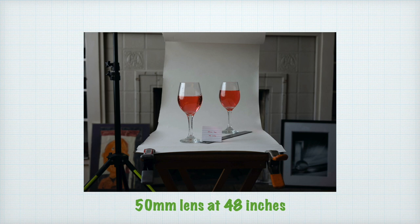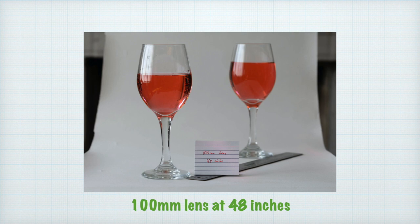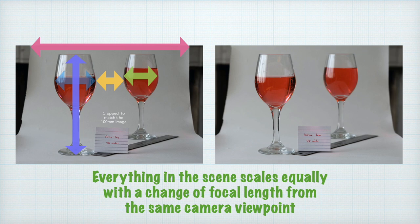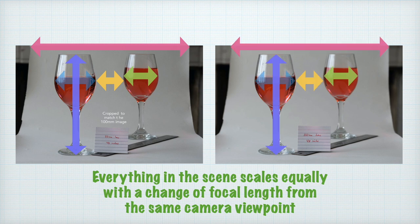From the same camera viewpoint, changing focal length is akin to cropping the image — if the camera remains in the same position, there is no change in perspective when you change focal length. Focal length determines the magnification or size of the subject in the frame. This image was made with a 50mm lens positioned 48 inches from the front glass. Changing to a 100mm lens without moving the camera makes everything in the scene twice as large, scaling up in the same proportion and maintaining their size relationships. If we crop the 50mm image to match the 100mm framing, they look the same except for greater depth of field in the cropped image.